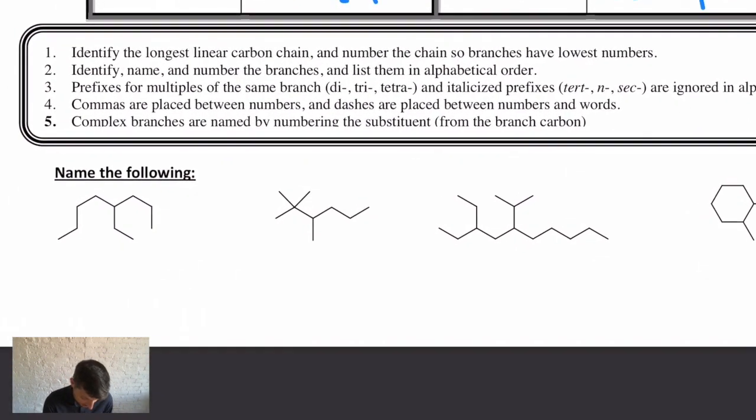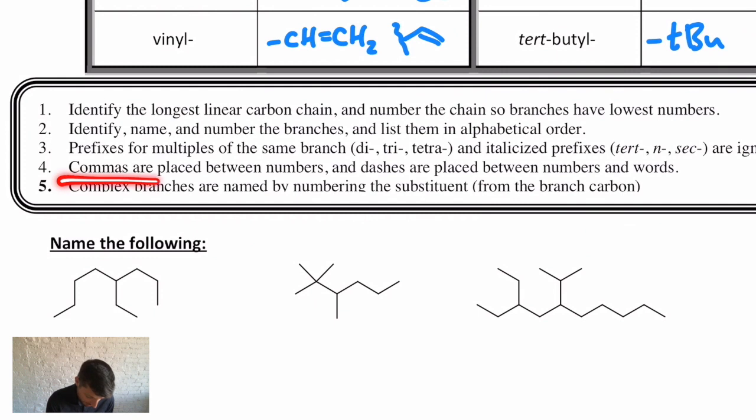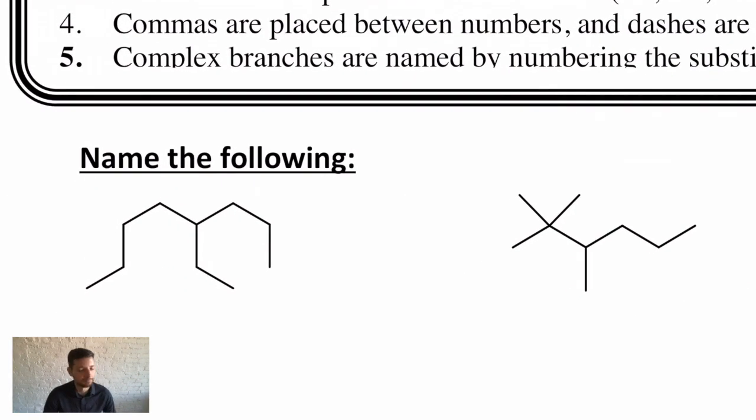And then some nitpicky rules: commas are put in between numbers, dashes are between numbers and words. And then if we come across one with a complex branch—I don't think we have one today—you'll do that by naming and numbering the substituent from the branched carbon. Again, we'll come back to these rules as we use them.